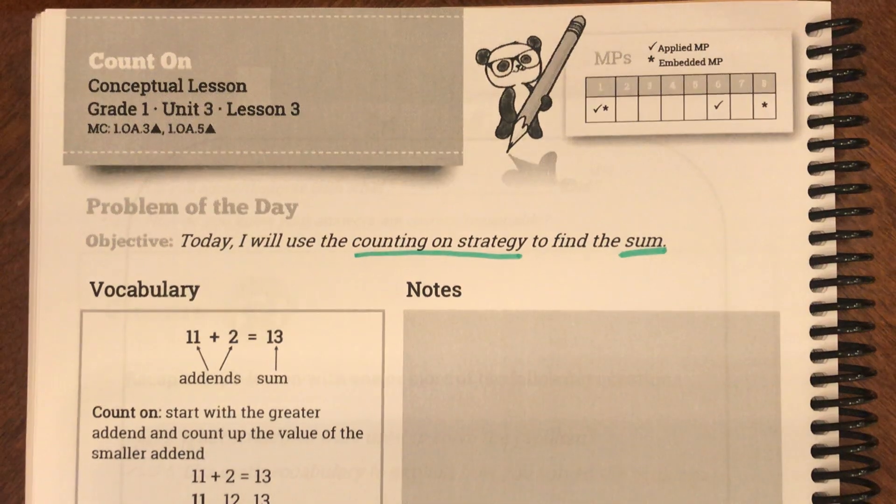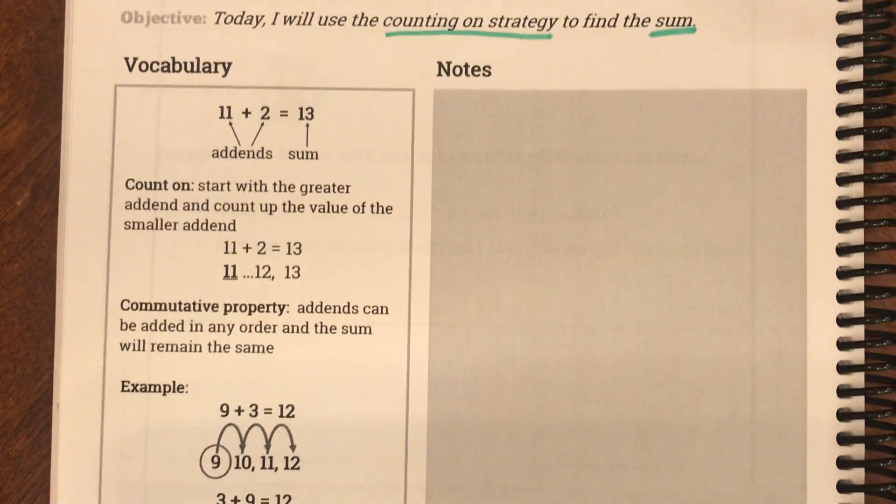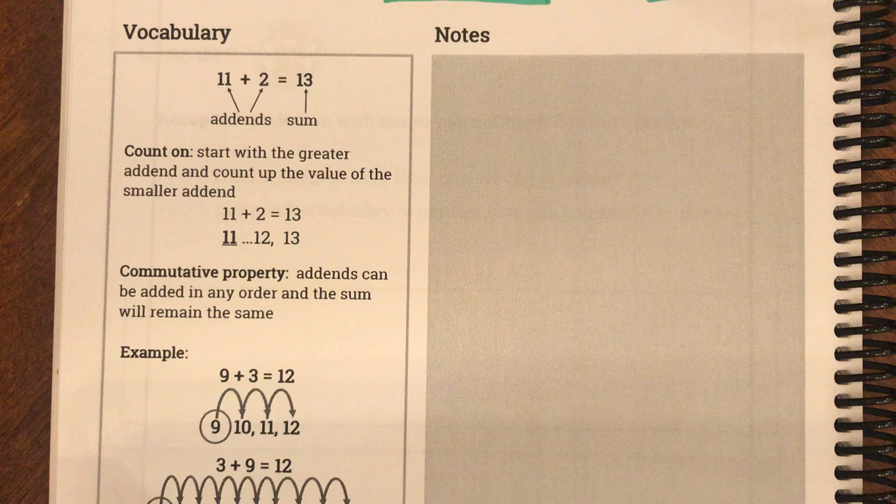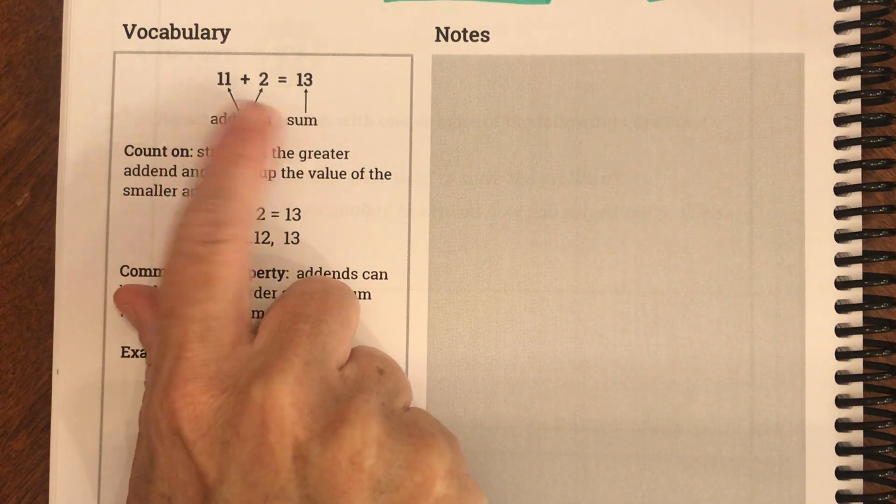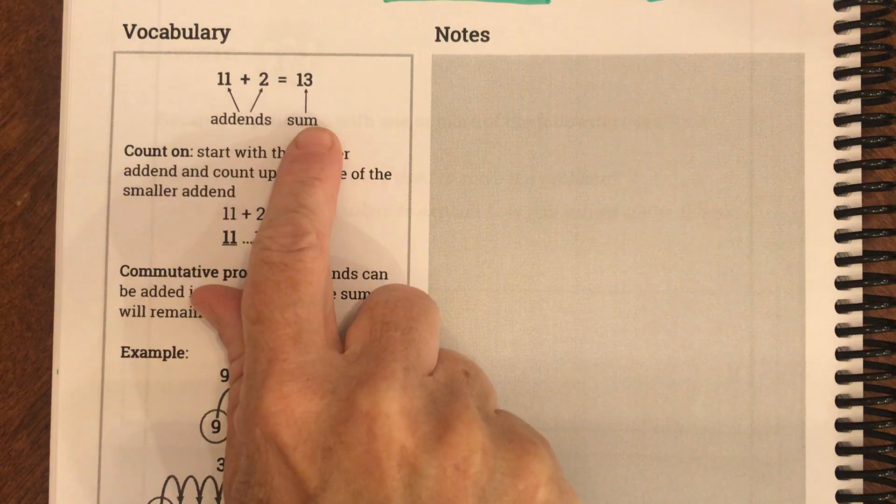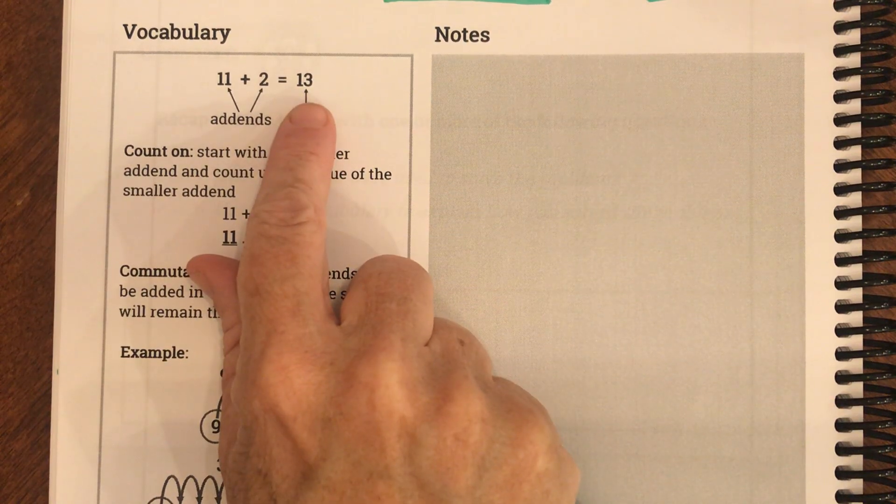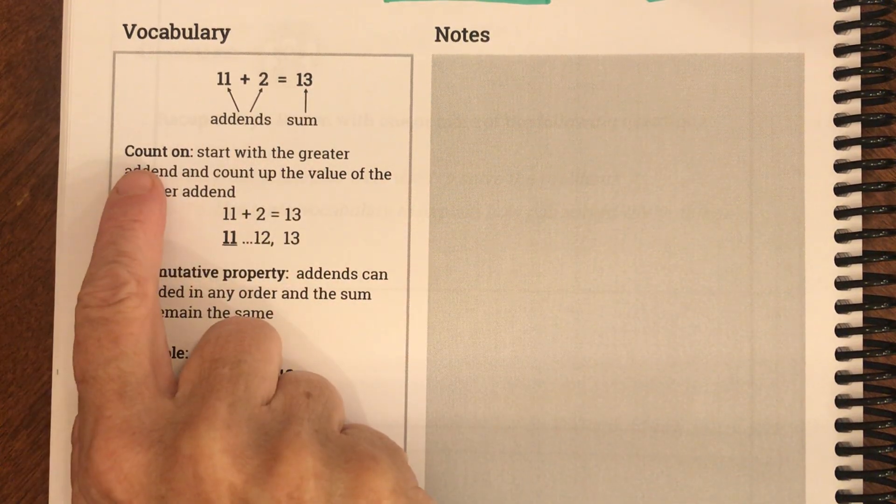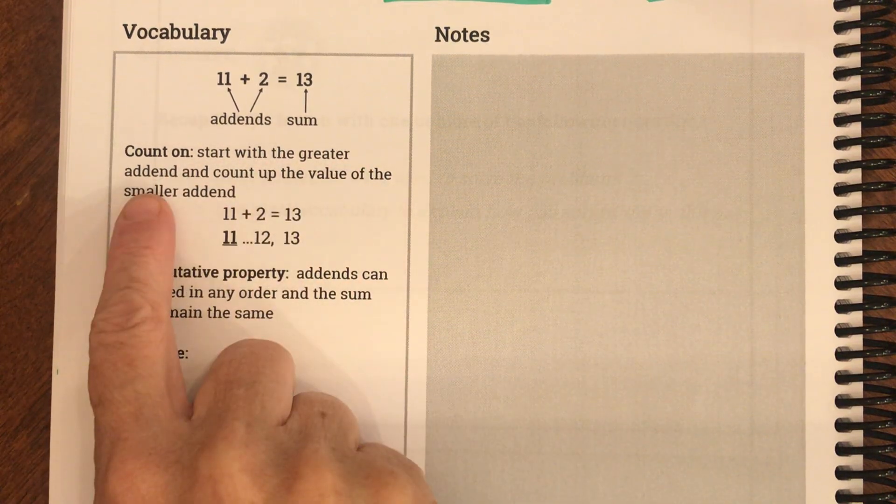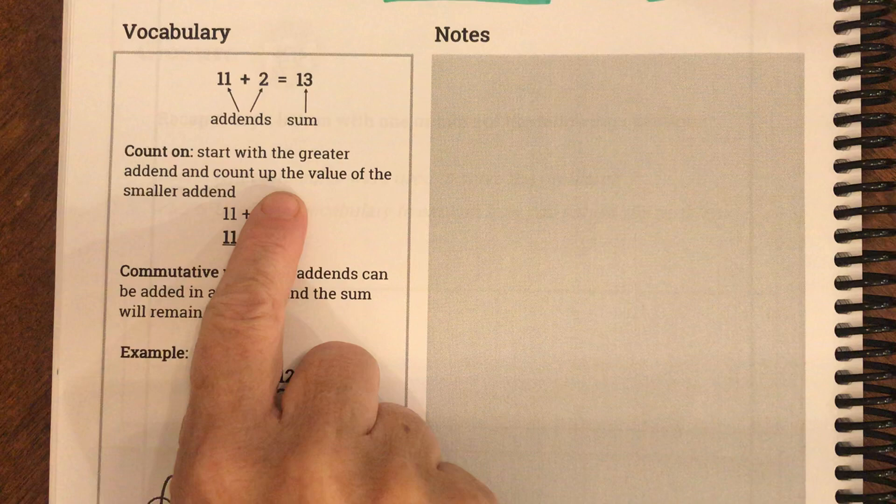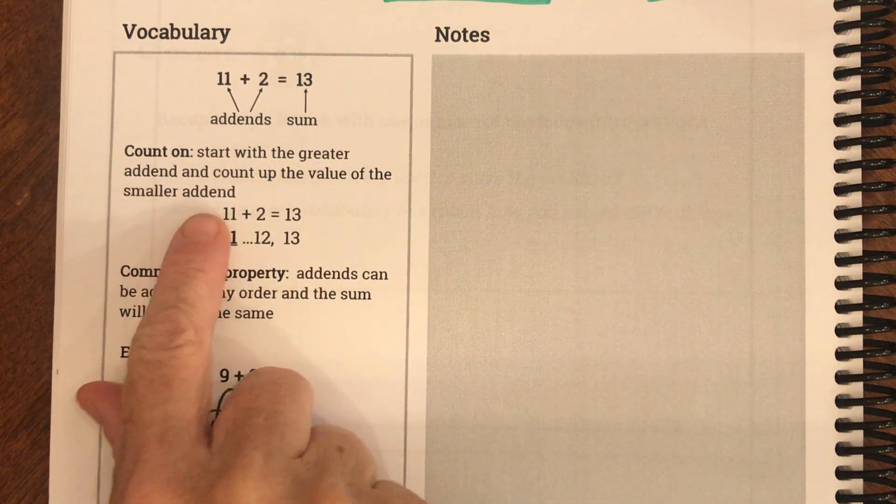So let's look at our vocabulary. Our vocabulary is, they're reminding us what our addends are. Our addends are the numbers that we add and our sum is our answer. And then it says, what does count on mean?